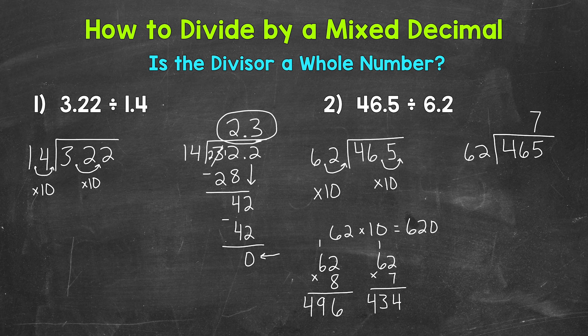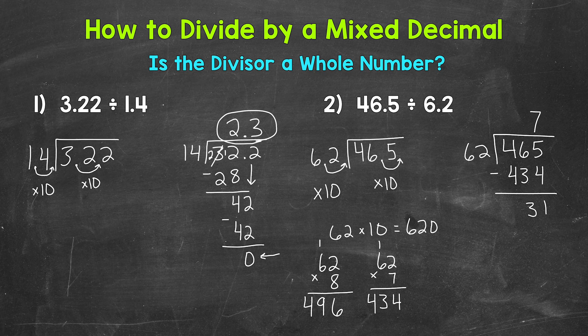We put the 7 above the 5 since we used 465. Multiply: 7 times 62 is 434. Subtract: 465 minus 434 equals 31. Now we are at the bring-down step, but there's nothing else to bring down. We don't want to write 7 remainder 31 — we are working with decimals and want to keep everything in decimal form, so we need to continue this problem.